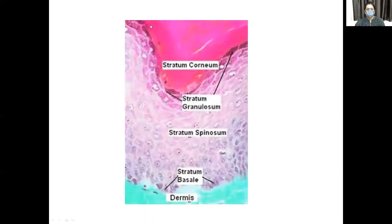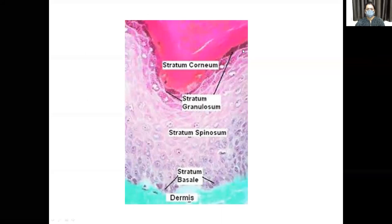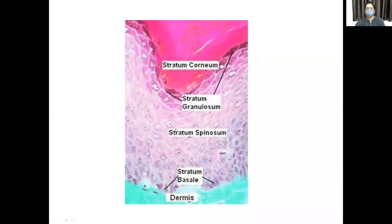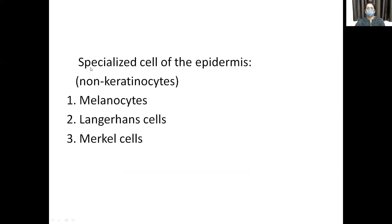Here we see the four layers: the stratum corneum, stratum granulosum, stratum spinosum — with slightly shrunken microfilaments and desmosomes — and the stratum basale having undifferentiated keratinocytes acting as the brick generator with stem cells. This is the dermis and this is the dermo-epidermal junction.